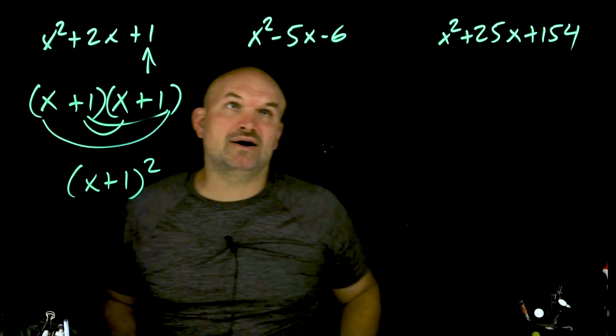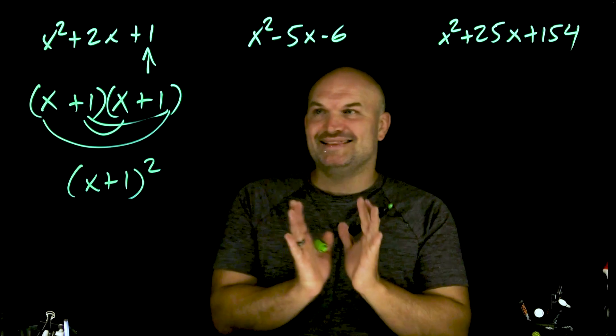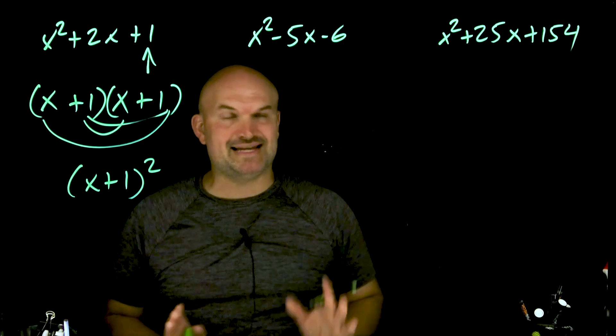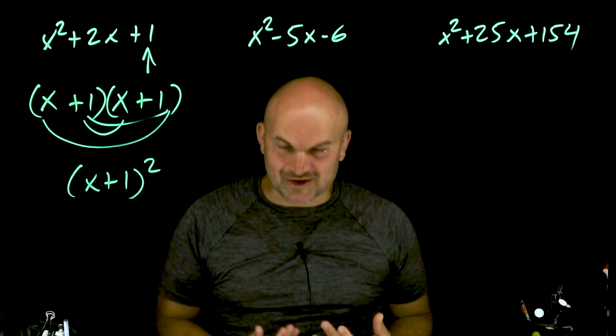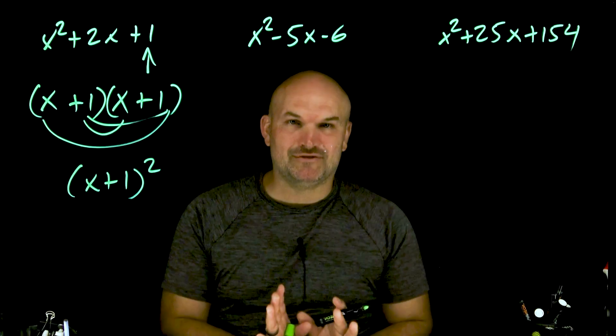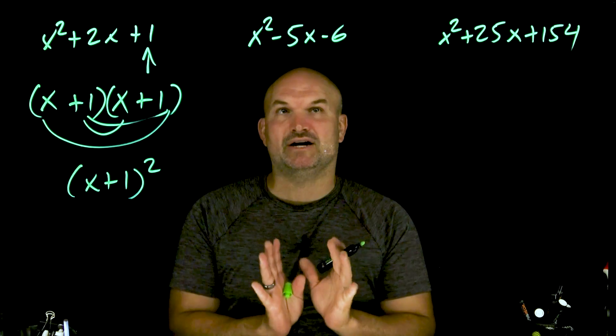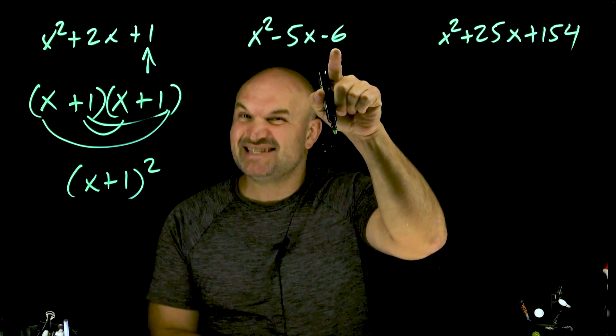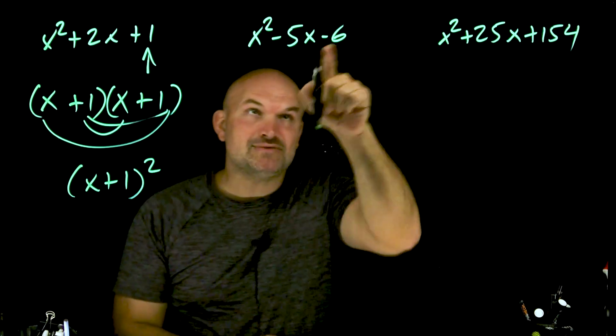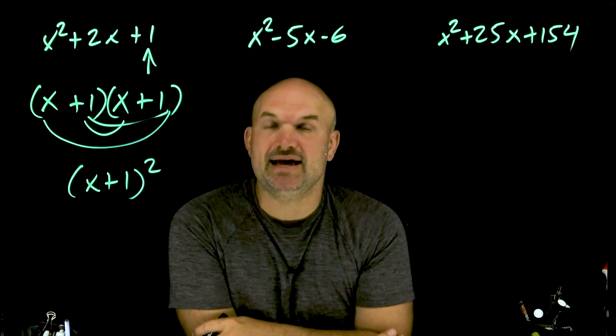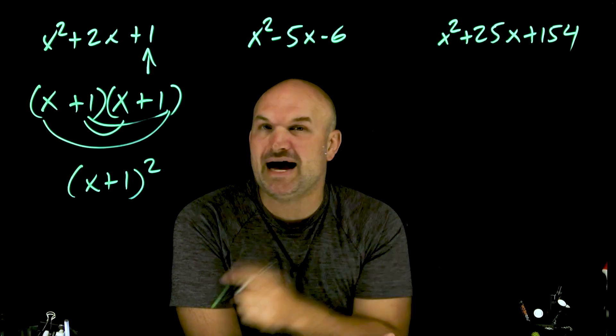Now let's take a look at our middle one. The reason this is kind of a medium example, students get this problem wrong all the time. The reason we need to be careful is, when we look at our last term 6, it has more than just 1 and 1. We have 6 and 1, and we have 3 and 2. So we have a couple options of factors.